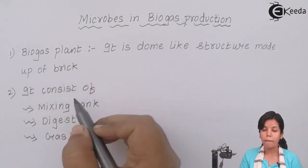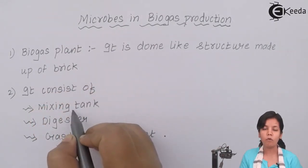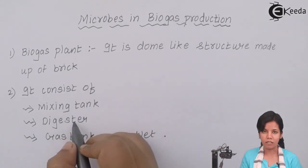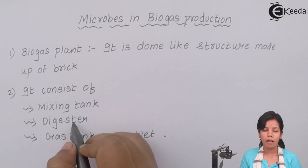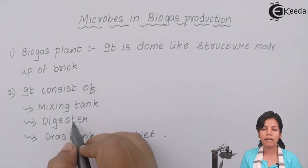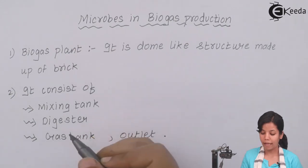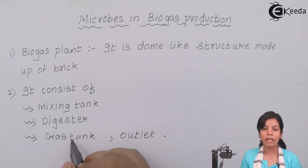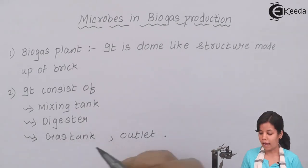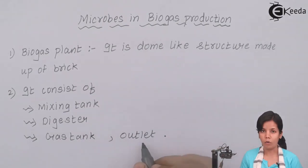It consists of a mixing tank where mixing of all the ingredients is done. The second part is the digester, where methanogens or anaerobic bacteria work on the slurry. The last part is the gas tank where gober gas or methane gas is formed and through the outlet this gober gas is removed.